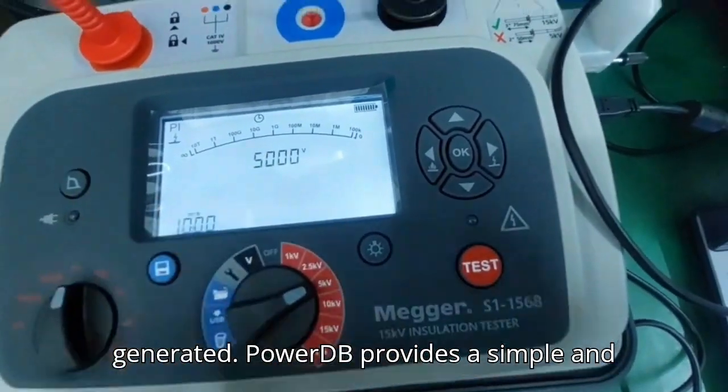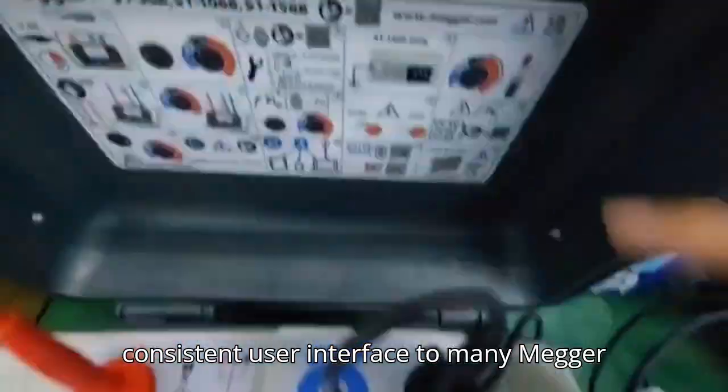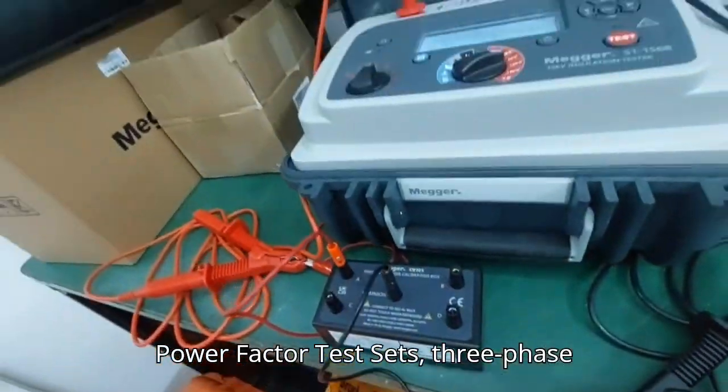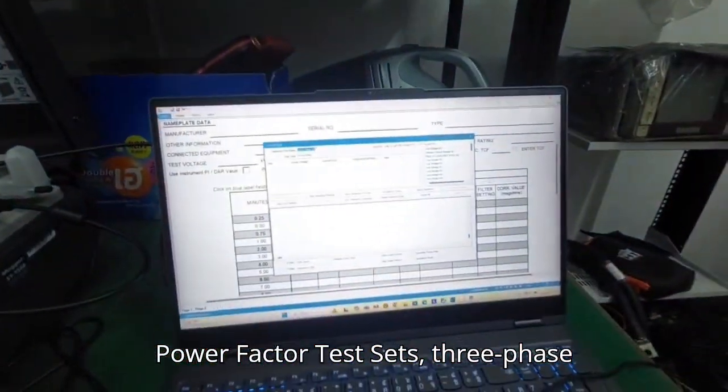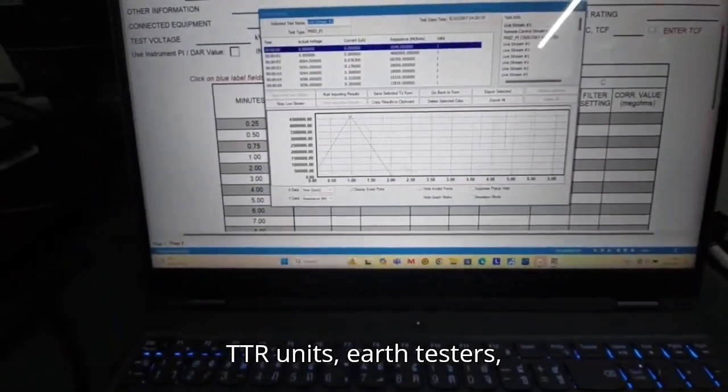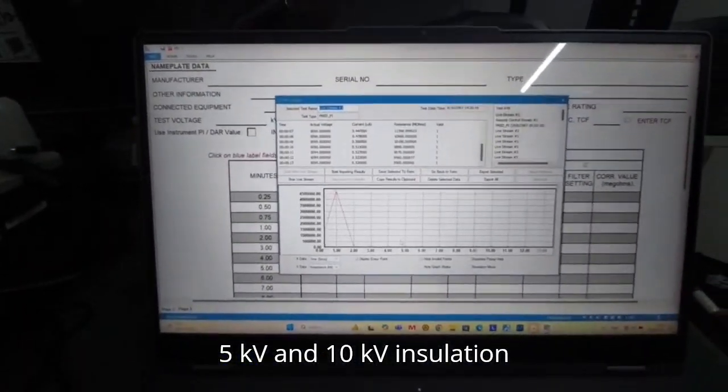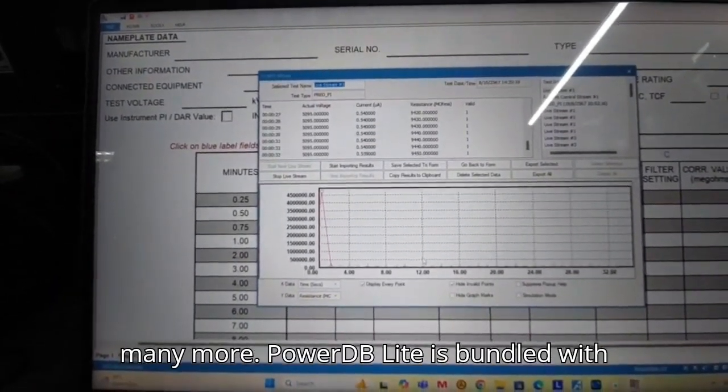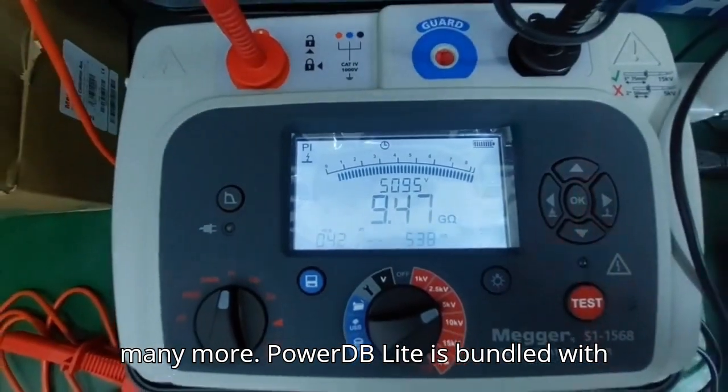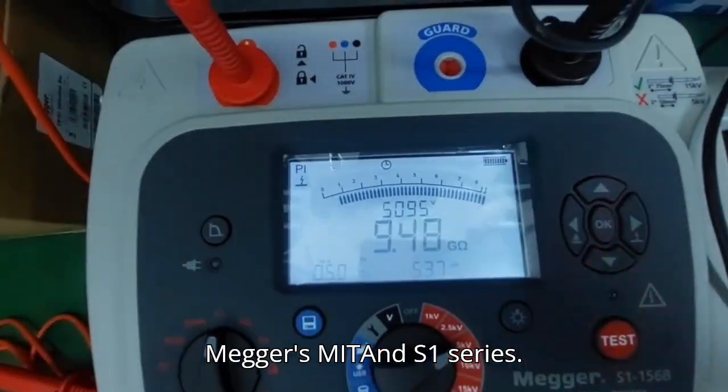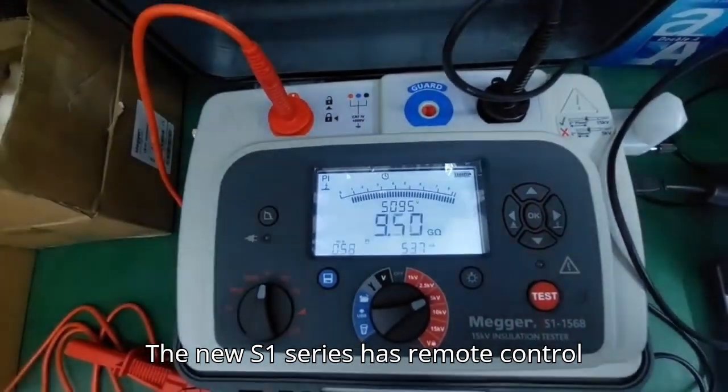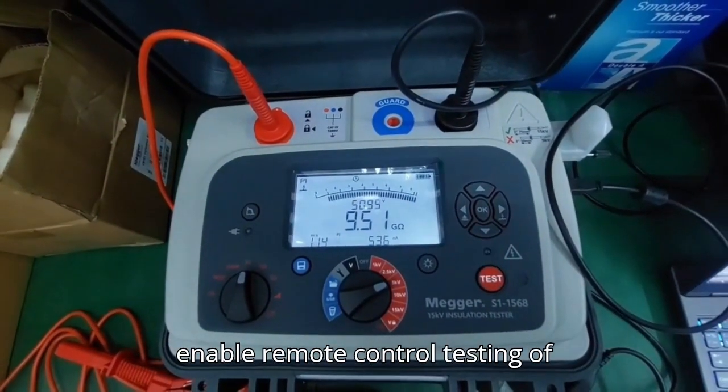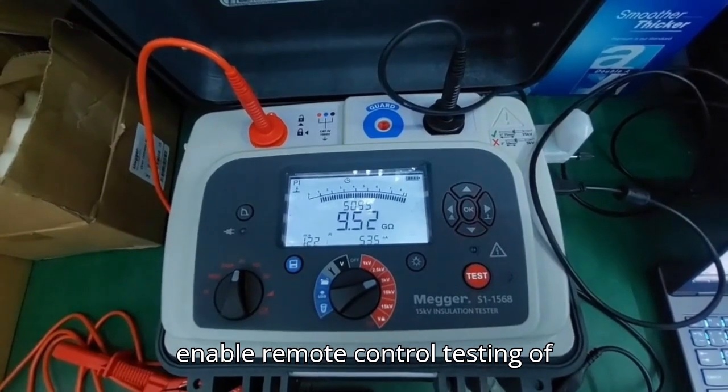PowerDB provides a simple and consistent user interface to many Megger instruments including the delta series power factor test sets, three phase TTR units, earth testers, 5kV and 10kV insulation resistance testers, IRTs and many more. PowerDB light is bundled with Megger's MIT and S1 series. The new S1 series has remote control capability and a specific application to enable remote control testing of assets.